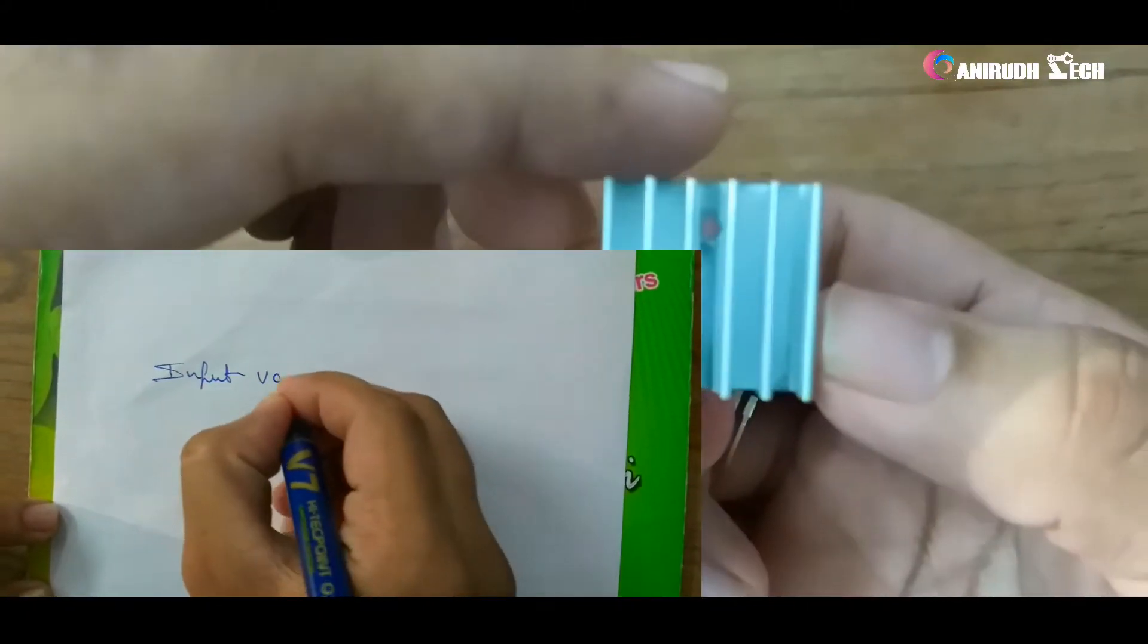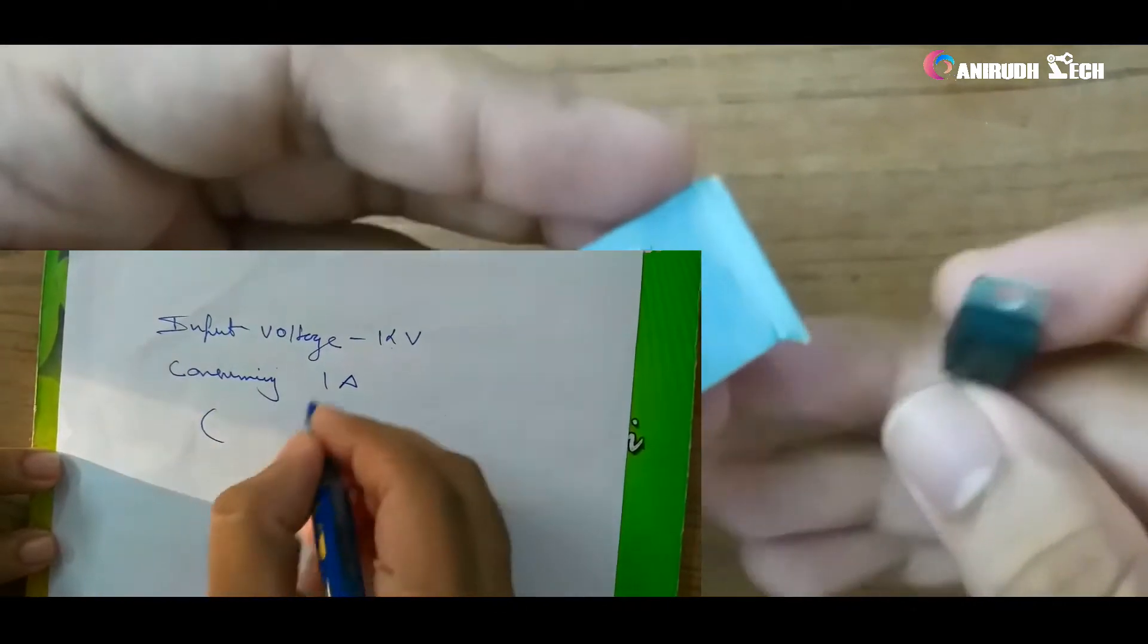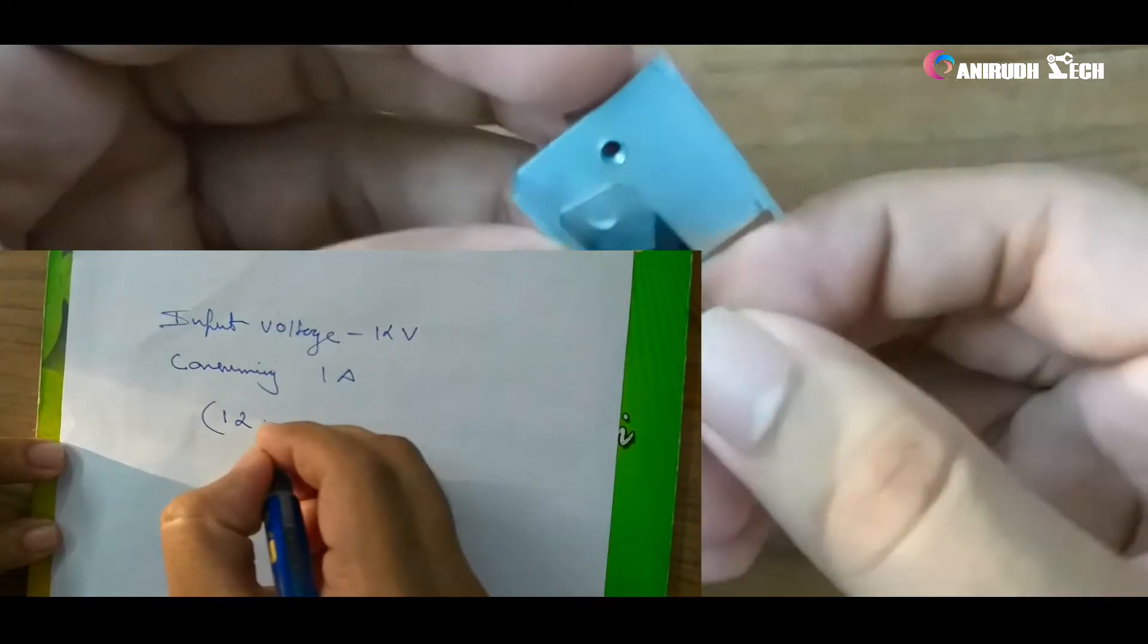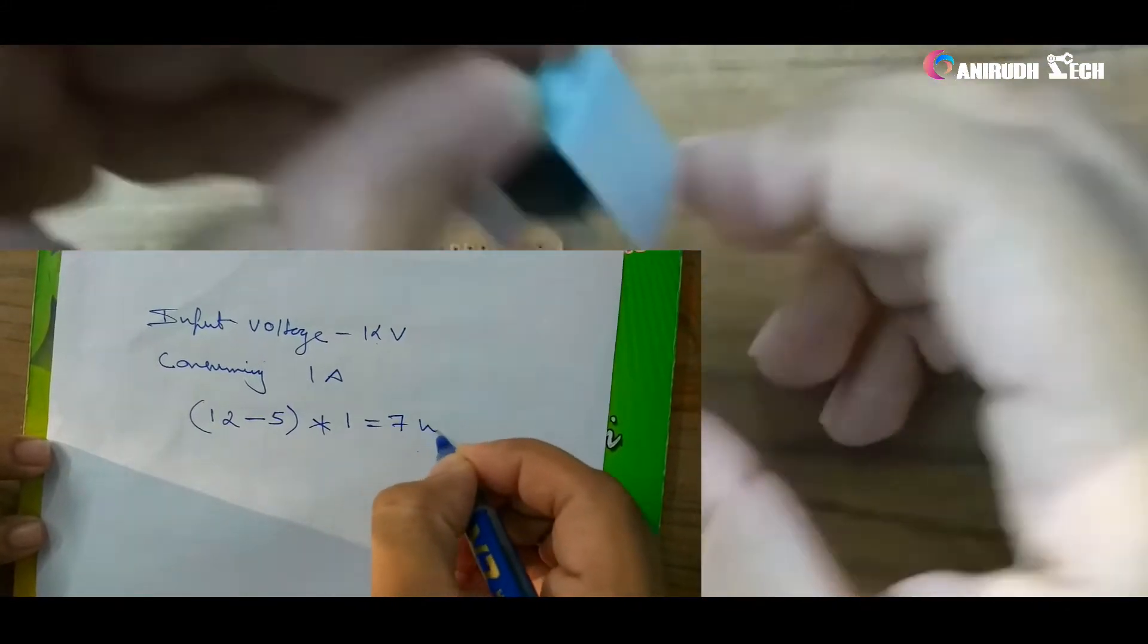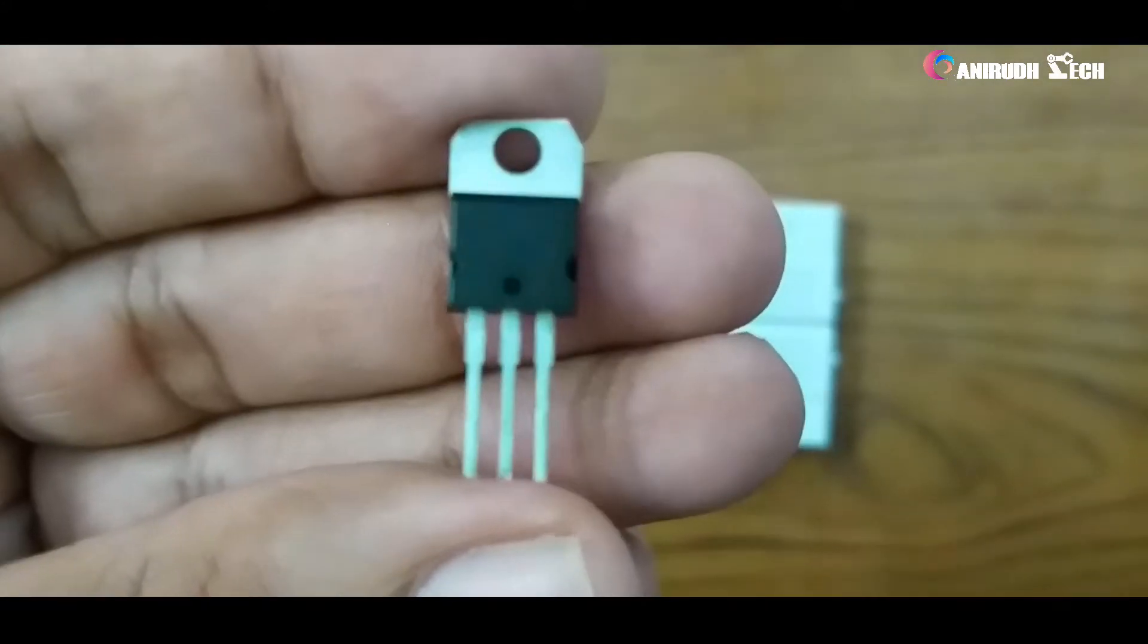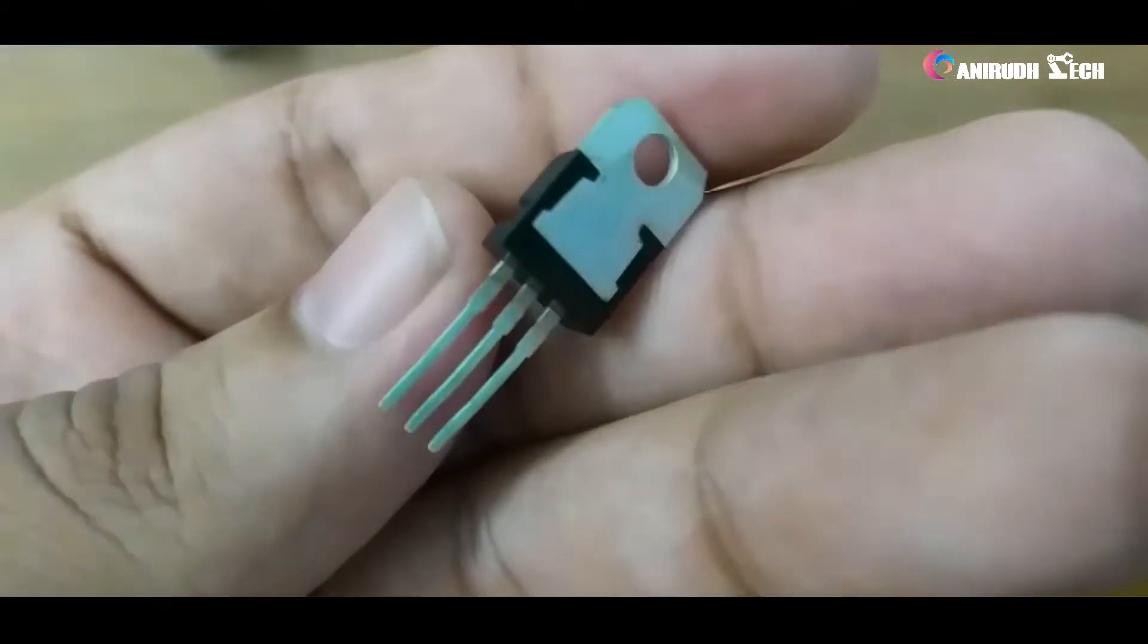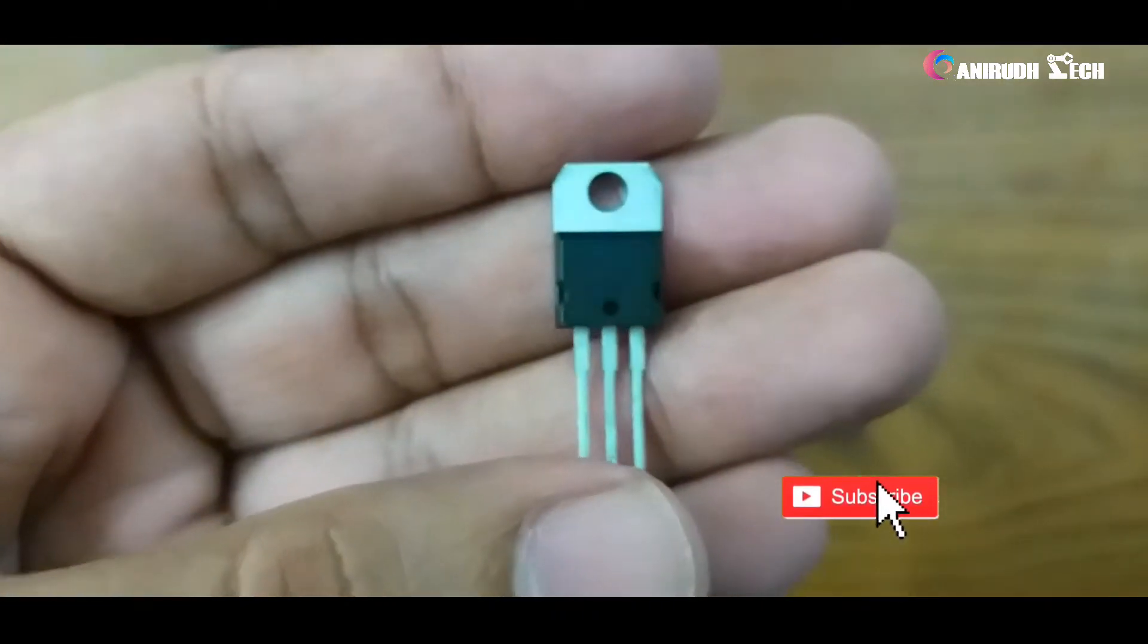For example, if the input voltage is 12V and we are consuming 1A, then 12 minus 5 into 1, that is equal to 7W. This 7W will be dissipated as heat. Although L7805 regulator IC only outputs a small ampere that is 1.5A, I am demonstrating how it works.